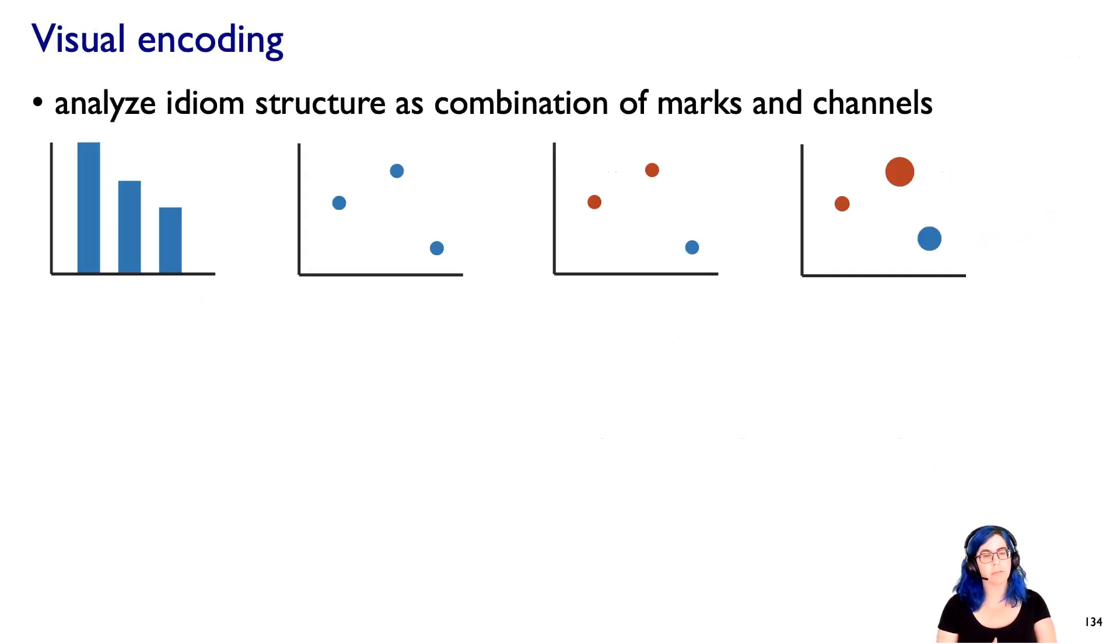Coming back to our idea of visual encoding, let's now try to analyze these idiom structures as some combination of marks and channels. What's going on in a bar chart? We're using the channel of vertical position - vertical position on the page, on the display - and our mark type, it looks like a line.